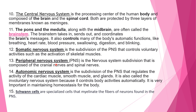Number thirteen: the peripheral nervous system, or PNS, is a nervous system subdivision composed of the cranial nerves and spinal nerves — both cranial and spinal nerves belong to the peripheral nervous system.